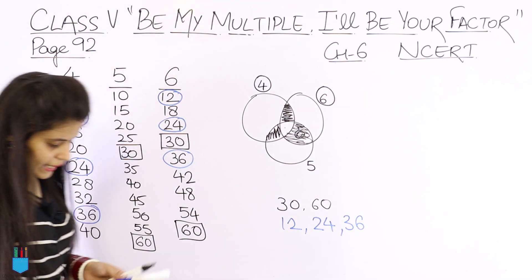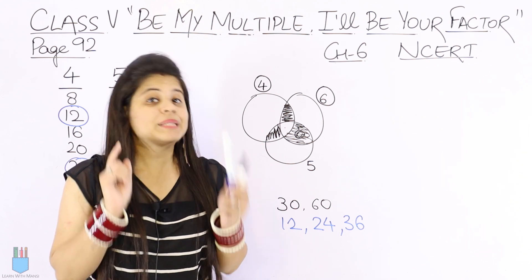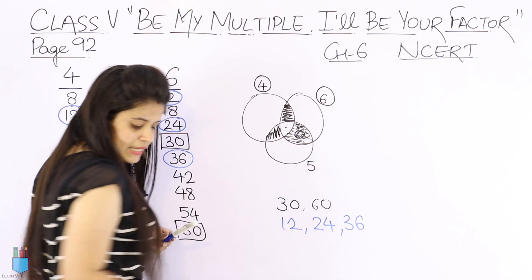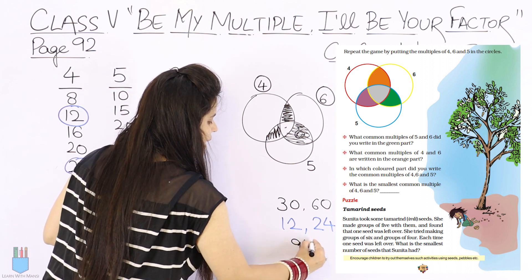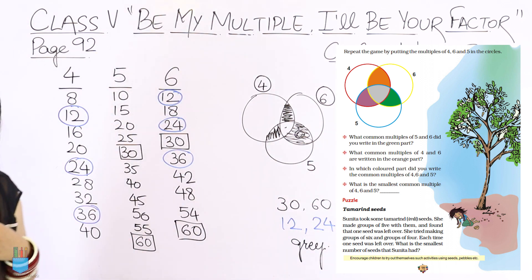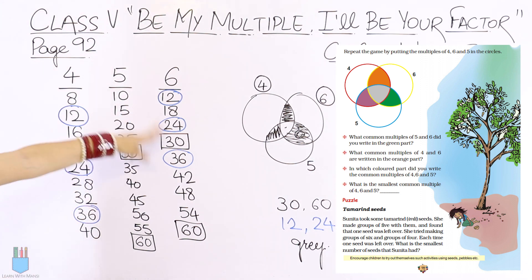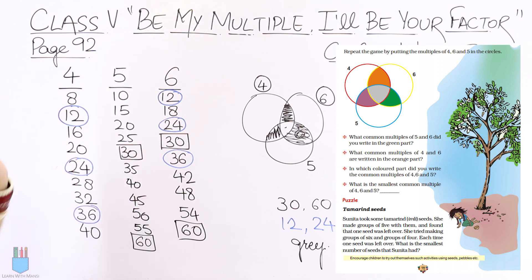In which colored part did you write the common multiples of 4, 6, and 5? I have told you — in the gray part. In the gray part, we write numbers that are common to all three. Which number is common? Right now there is no number. 20 is in 4 and 5 but not in 6. 12 is in 4 and 6 but not in 5. So we need to find one common multiple of all three.